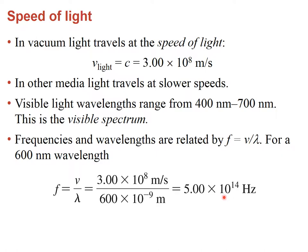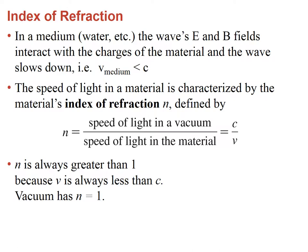Later we'll see refraction — the bending of light when it goes from one medium to another. To characterize refraction, we look at the ratio of the velocity of light in vacuum or air to the velocity in the second medium. This ratio is called the index of refraction (n). Since the speed of light in vacuum is the maximum possible speed, this ratio is always greater than one.